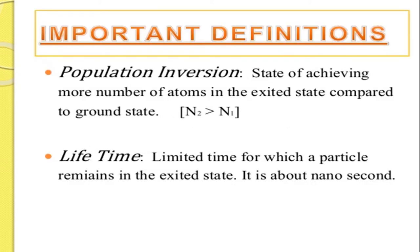Some important definitions: Population inversion is a state of achieving more number of atoms in the excited state compared to the ground state. Lifetime is the limited time for which a particle remains in the excited state — it is about nanoseconds — and this limited time is known as lifetime.